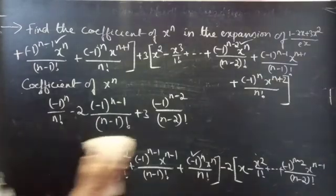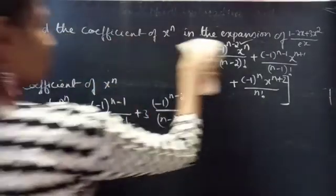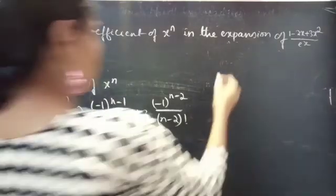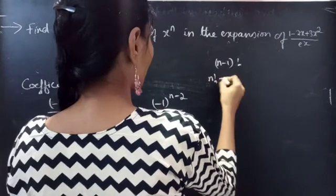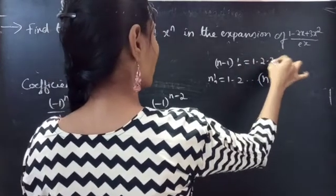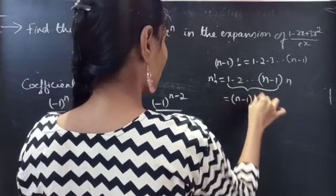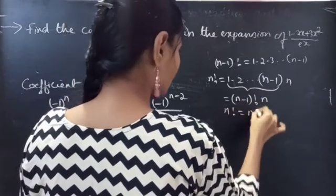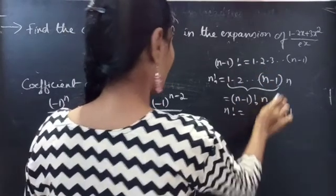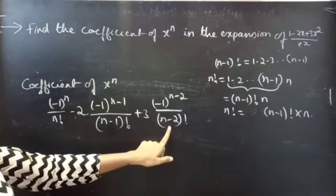We will change the denominators to n factorial. We know that n factorial equals n times n minus 1 factorial, so n minus 1 factorial into n equals n factorial. For the second term we multiply and divide by n to convert n minus 1 factorial to n factorial.